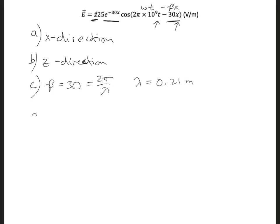In part D, we want to know what the frequency of the wave is. Well, we just identified omega, which is 2 pi times 10 to the 9th. That's 2 pi f. Solving for f, we get 2 times 10 to the 9th hertz.